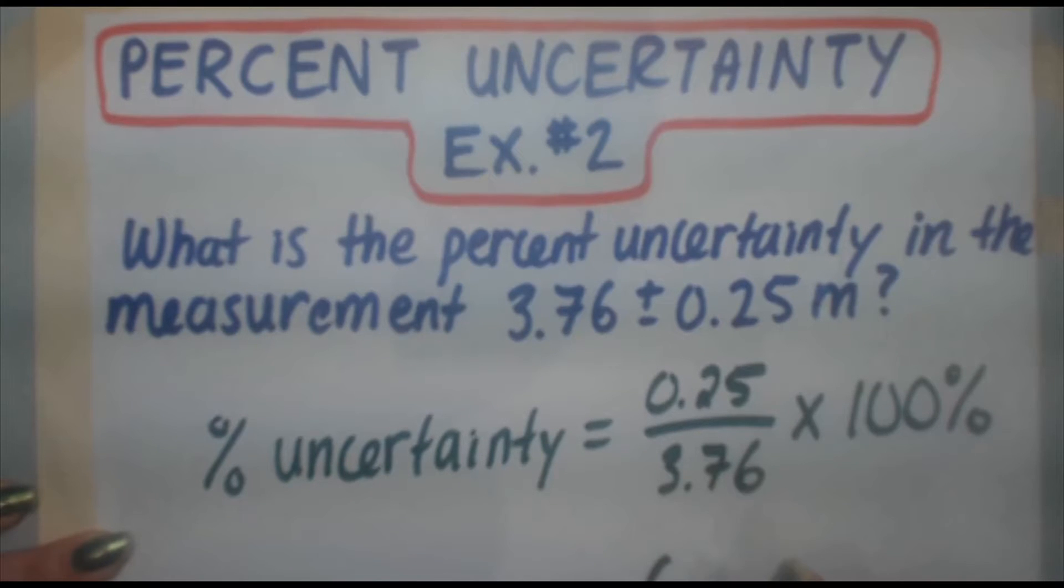This leaves you with a percent uncertainty of 6.6%. So 6.6%, not bad. It's a bit high, especially compared to example number one, but there it is.